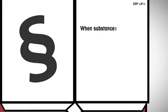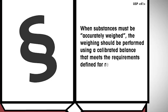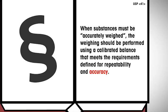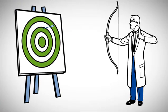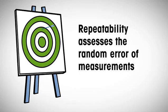USP 41 now also requires testing for accuracy. When substances must be accurately weighed, the weighing should be performed using a calibrated balance that meets the requirements defined for repeatability and accuracy. What's the difference between the two? Repeatability assesses the random error of measurements, or, more scientifically speaking, the closeness of agreement between values obtained by replicate measurements on the same object.